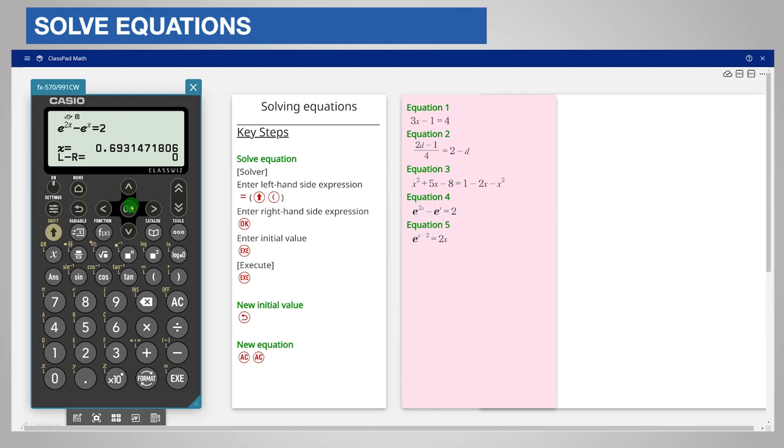The calculator finds the solution x is equal to 0.693 to 3 significant figures. Note that this equation can be solved exactly using logarithms and so this calculation is a helpful check on your working.